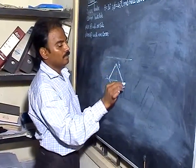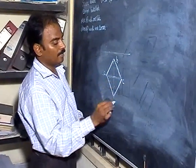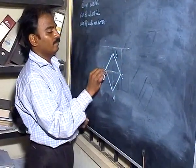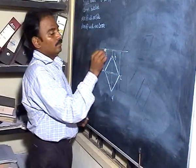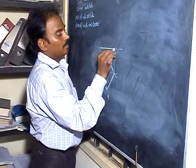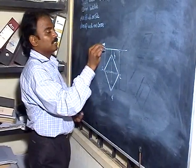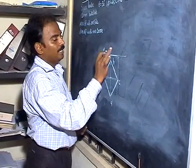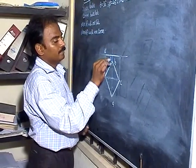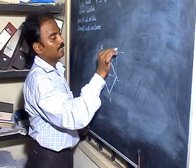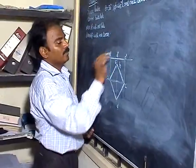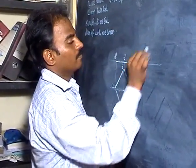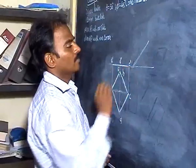Name it as ABCT. Now you will be getting this line here. You are getting the front view for the first step. A dash, then you have D dash, C dash and D dash. Take that same 30 degree inclined.